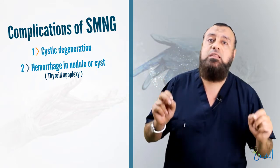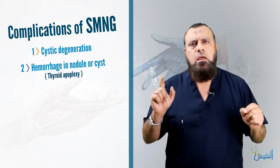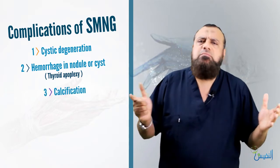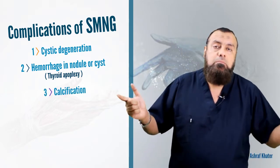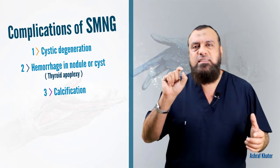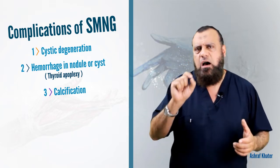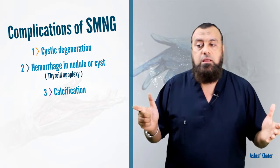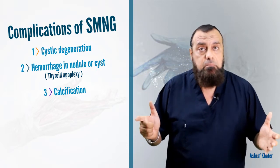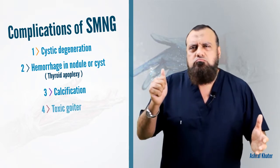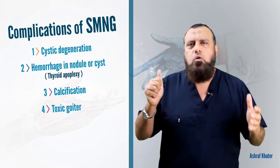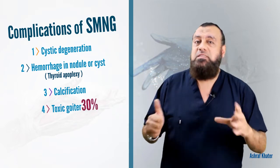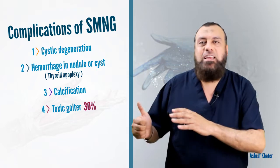Number two is hemorrhage inside a nodule or cyst, called thyroid apoplexy. Number three is calcification, which may sometimes be mistaken for a tumor because calcification feels like a hard nodule or hard consistency of the gland, and may be confused with malignancy.